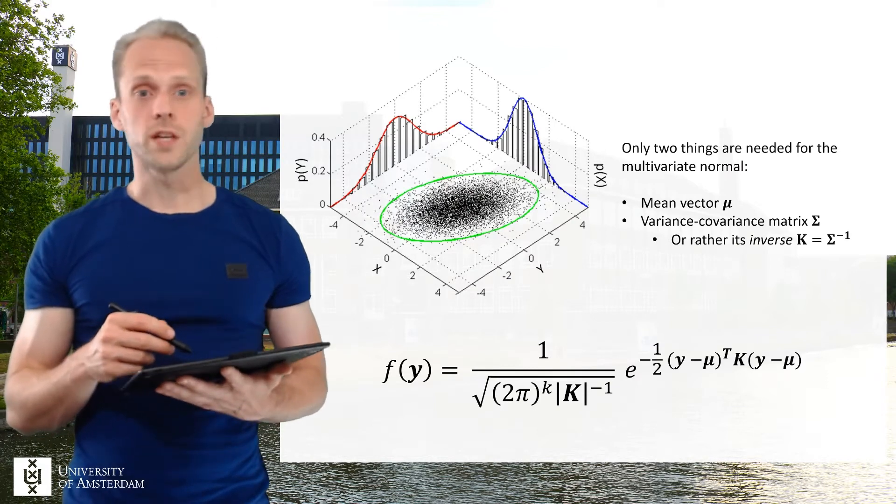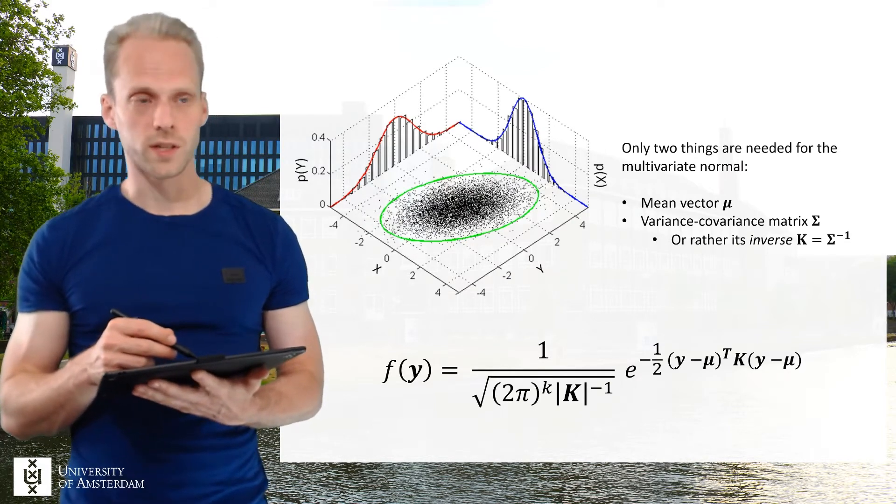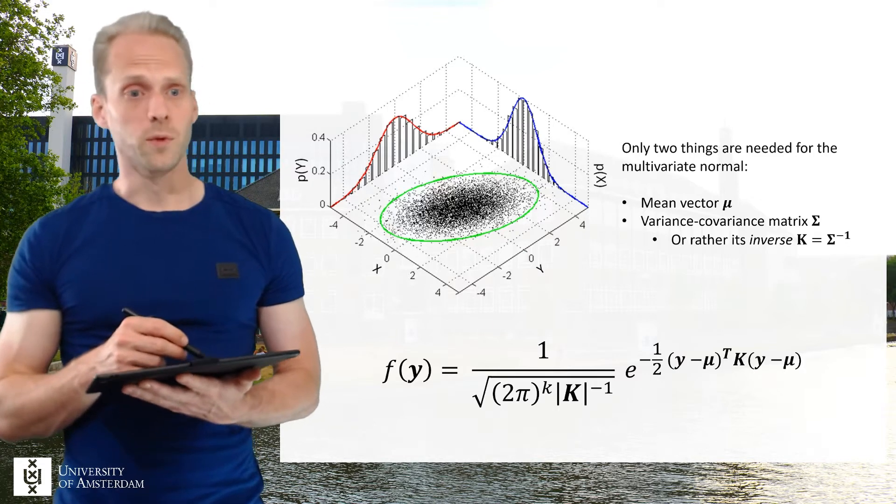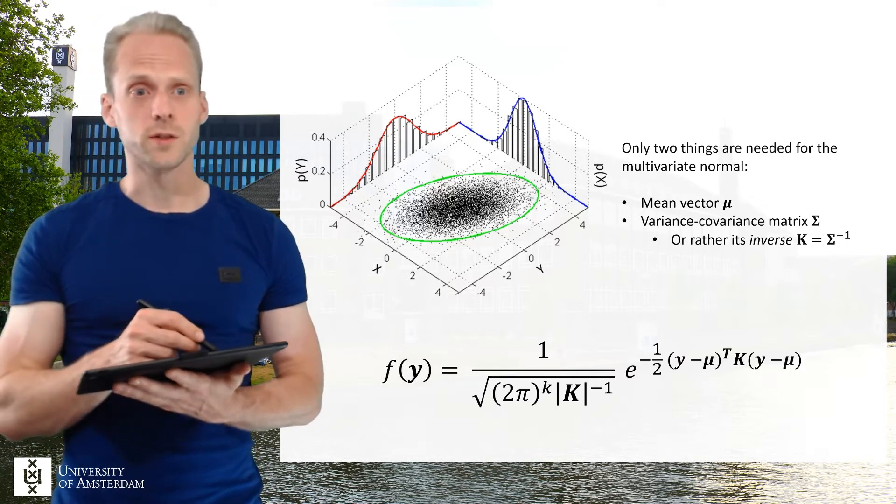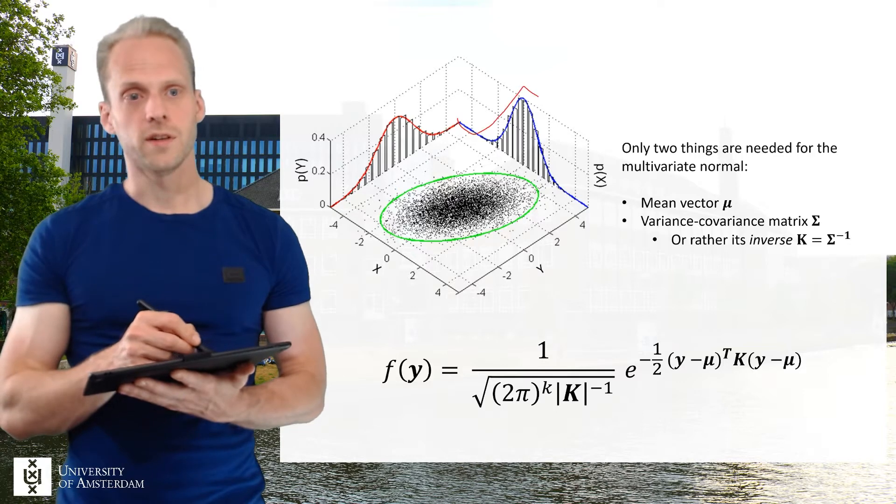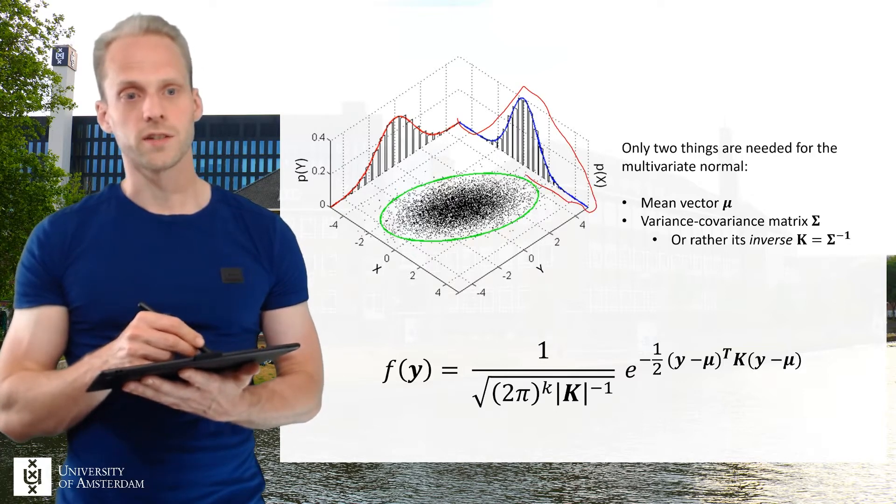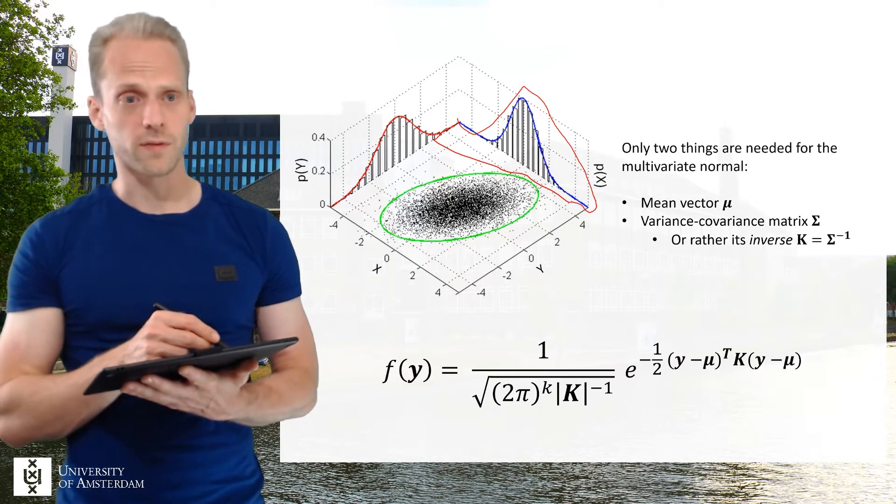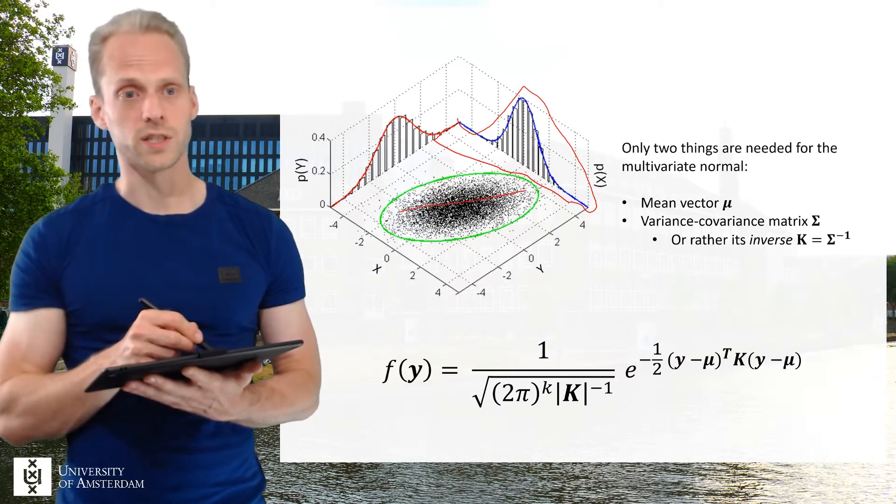When data are continuous we can assume that they are multivariate normally distributed. And multivariate normally distributed basically means two things. It means that every histogram of the data has this bell shape, but it also means that every effect between two variables is linear.